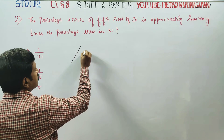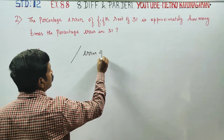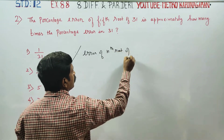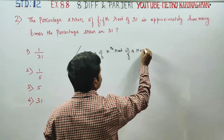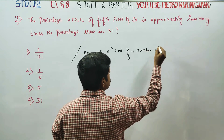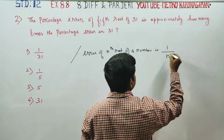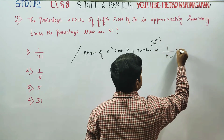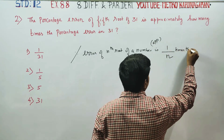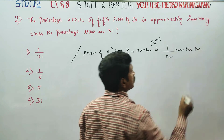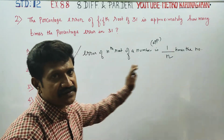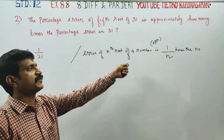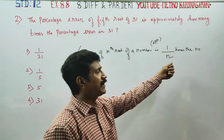The percentage error of the nth root of a number is approximately 1 by n times the percentage error of that number. This is the ready-made result available in the book.